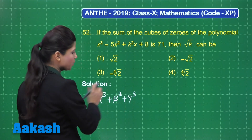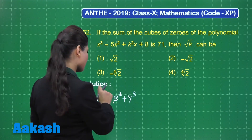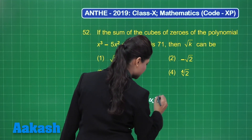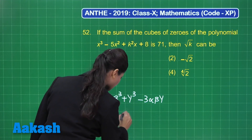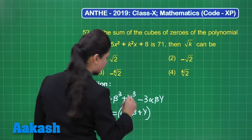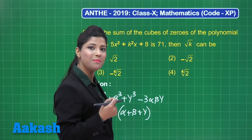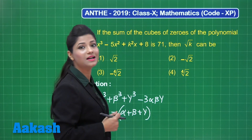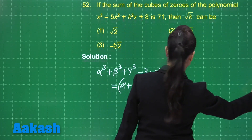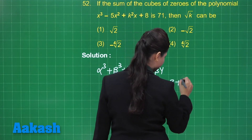The value of this quantity is 71. We know our special identity related to this: alpha cubed plus beta cubed plus gamma cubed minus 3 alpha beta gamma is equal to alpha plus beta plus gamma times alpha squared plus beta squared plus gamma squared minus alpha beta minus beta gamma minus gamma alpha, which can be simplified and represented as alpha plus beta plus gamma.